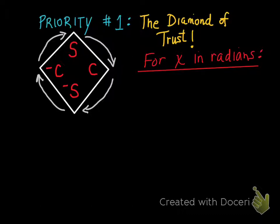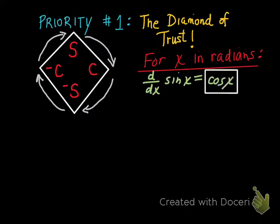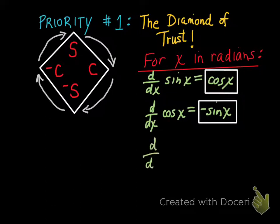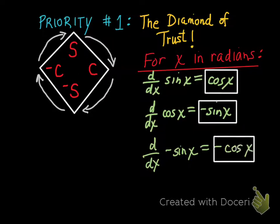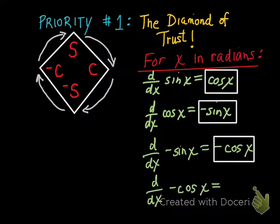What I'm going to show you is inaccurate if you're talking about degrees. When X is in radians: the derivative of sine is cosine of X; the derivative of cosine X is negative sine X; the derivative of negative sine X is negative cosine X; and the derivative of negative cosine X is sine X.